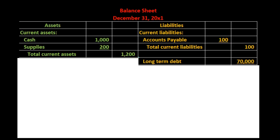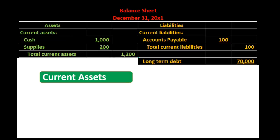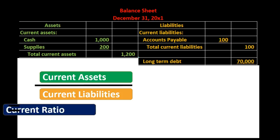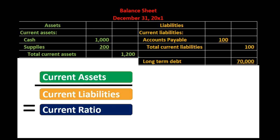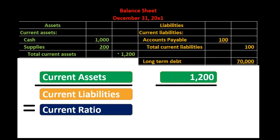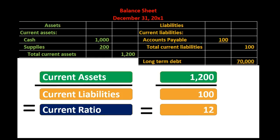I'm going to draw a line here — that's where we are concentrating. Our current ratio is going to be current assets divided by current liabilities. If we plug the numbers in, current assets consist of cash and supplies of $1,200, divided by current liabilities of $100. Therefore, 1,200 divided by 100 is 12. What that means is we can pay off that $100 we owe within a year 12 times with just the current assets.